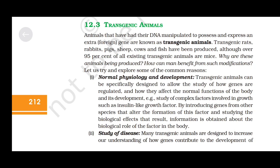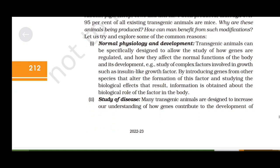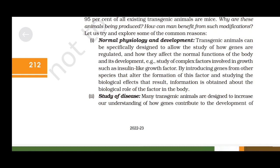First, normal physiology and development. Transgenic animals can be specifically designed to allow the study of how genes are regulated and how they affect the normal functions of the body and its development. For example, the study of complex factors involved in growth — such as insulin-like growth factor — is carried out by introducing genes from other species that alter the formation of this factor, and studying the biological effects that result, to obtain information about its biological role in the body.